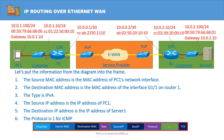Let's now put the information from the diagram into the frame. The source MAC address is the MAC address of PC1's network interface. The destination MAC address is the MAC address of interface G1/1 on Router1. The type is IPv4. The source IP address is the IP address of PC1. The destination IP address is the IP address of Server1. And the protocol is 1 for ICMP.